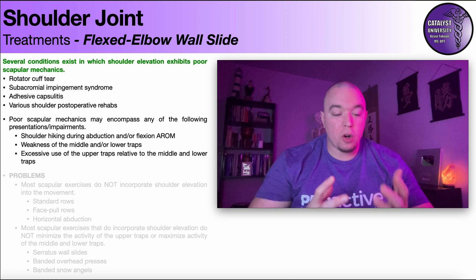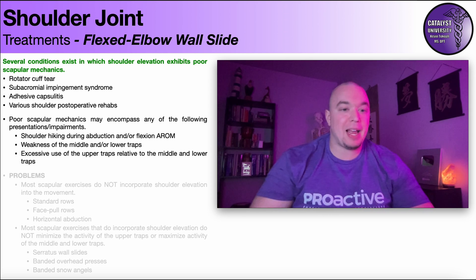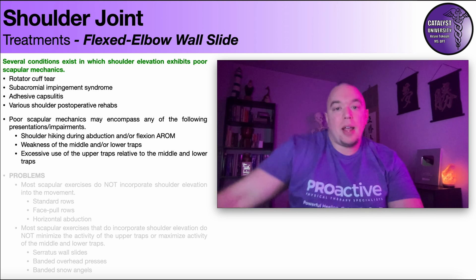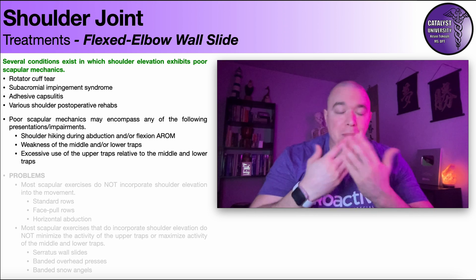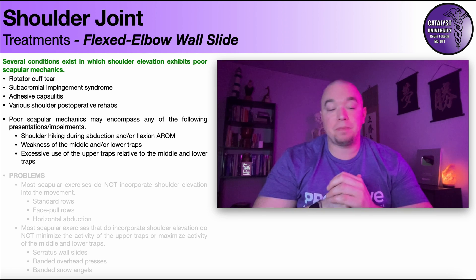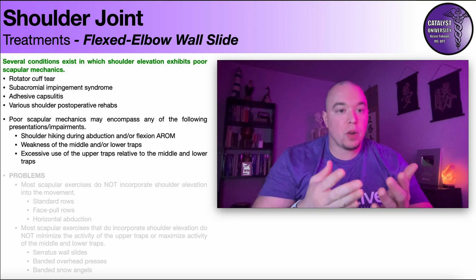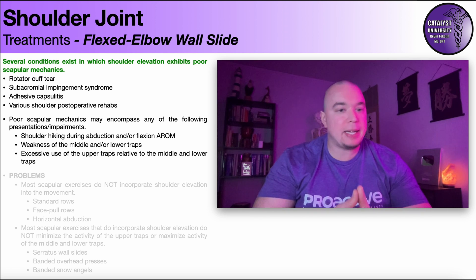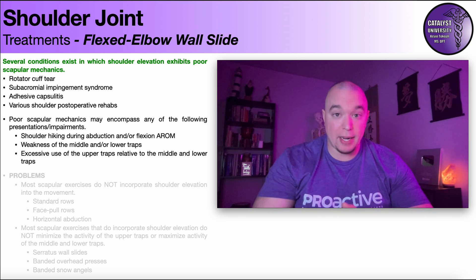The phrase 'poor scapular mechanics' is an umbrella phrase — it encompasses a wide array of presentations. Number one: shoulder hiking during abduction and/or flexion range of motion, which can also occur during scaption but is usually more pronounced with abduction and flexion. Number two: weakness of the middle and/or lower traps. Oftentimes after an injury, or with gradual weakening or a post-operative repair, the middle and lower traps — and also the serratus anterior — get weak. Really all the muscles get weak, even the upper traps to some extent.